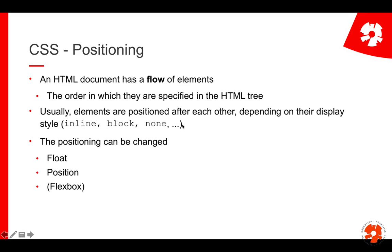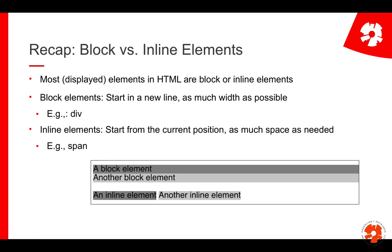A lot of the positioning you'd like to do involves changing the default flow. For example, instead of two divs stacked under each other as block elements, you might want them next to each other. There are a number of ways to do that — we'll look at three: float, which is fairly difficult but used to be common; the position property, which is a bit more complex; and nowadays flexbox, which simplifies the process quite a lot.